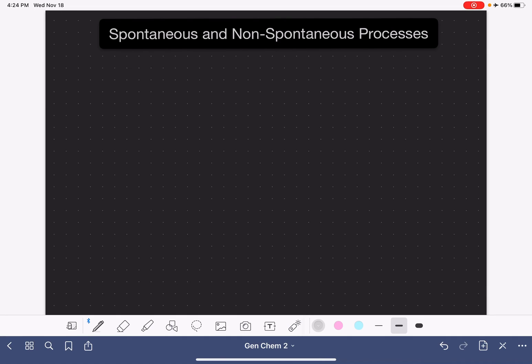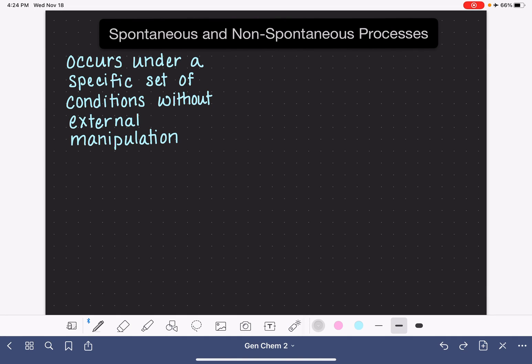A spontaneous process is one that occurs under a specific set of conditions without any sort of external manipulation. It's a process that will just happen naturally on its own without you needing to do anything to help it along.